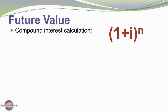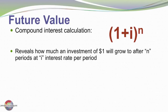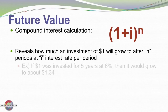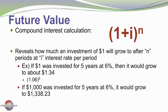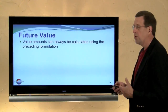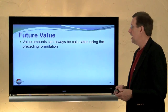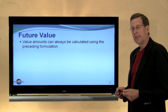The future value formula is (1 + i) to the nth power, which reveals how much an investment of $1 would grow to after n periods at interest rate i per period. For example, $1 invested for 5 years at 6% grows to about $1.34 — that is 1.06 to the 5th power. Or $1,000 invested for 5 years at 6% grows to $1,338.23, which is $1,000 times 1.06 to the 5th. You can do these calculations using the formula, or calculate them in other ways.